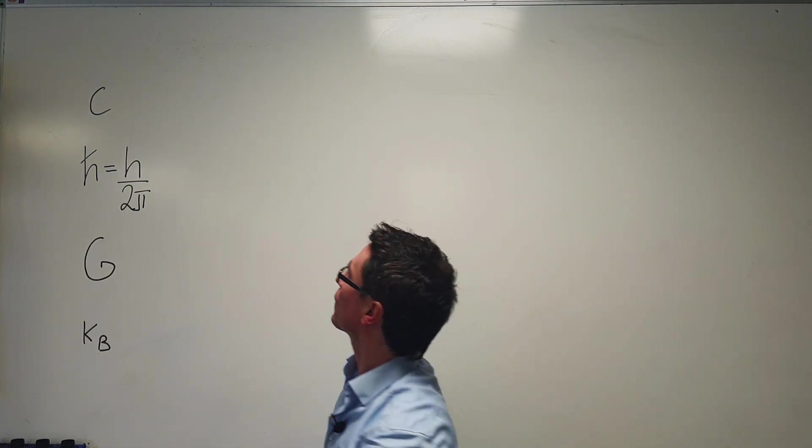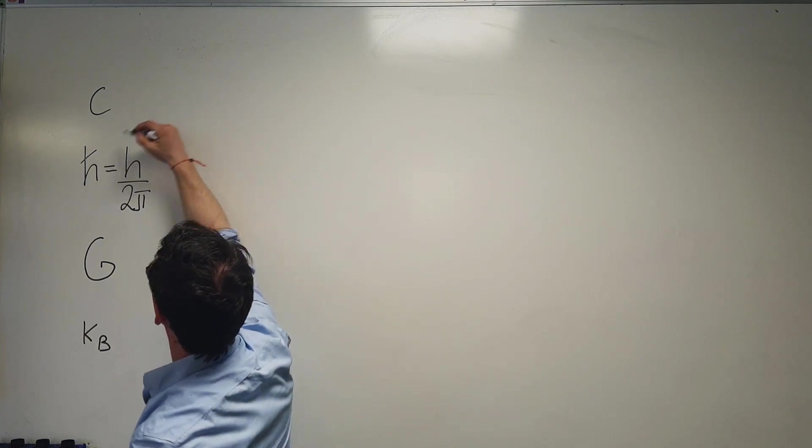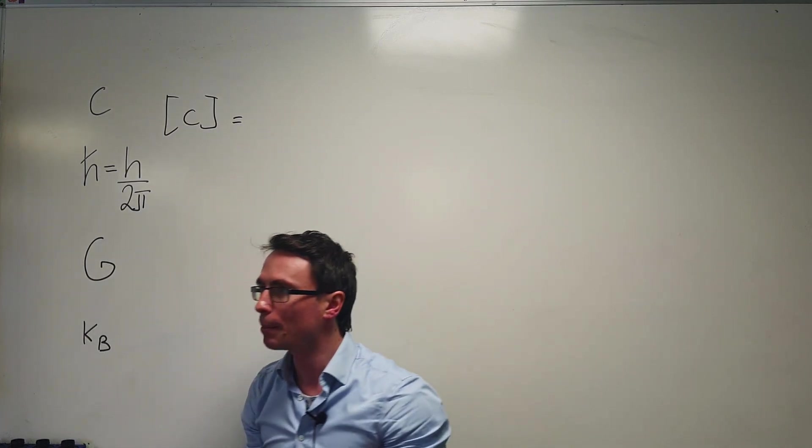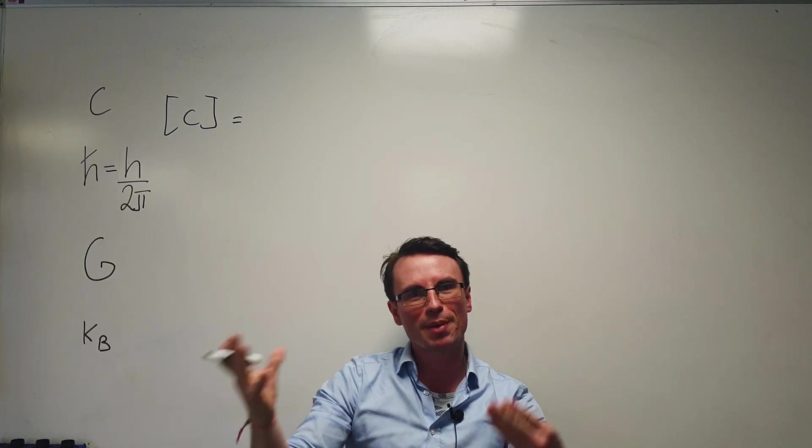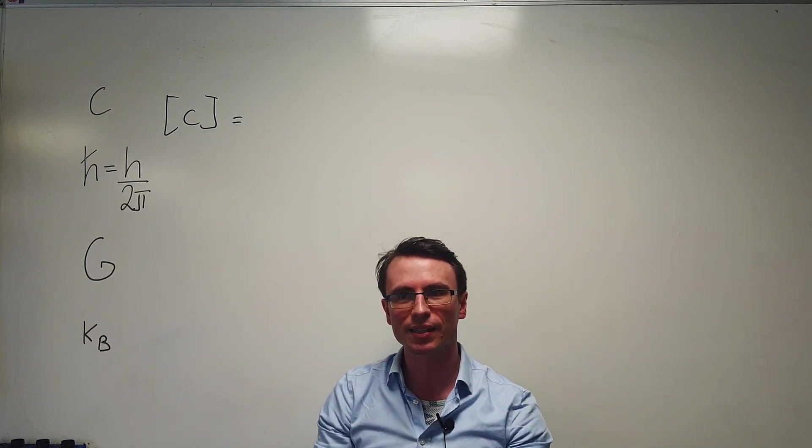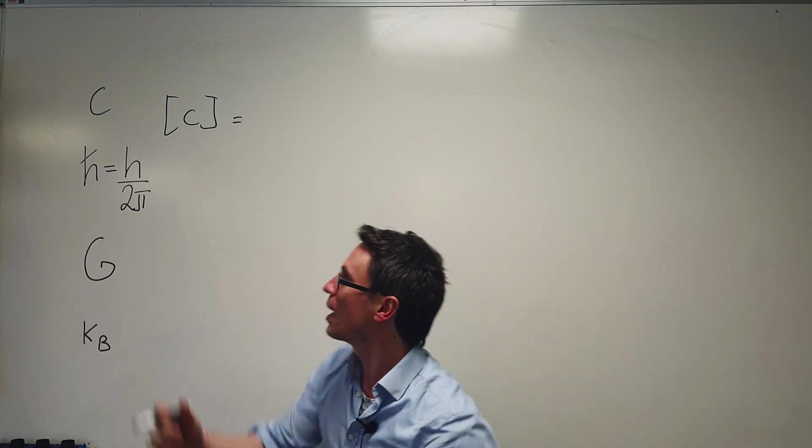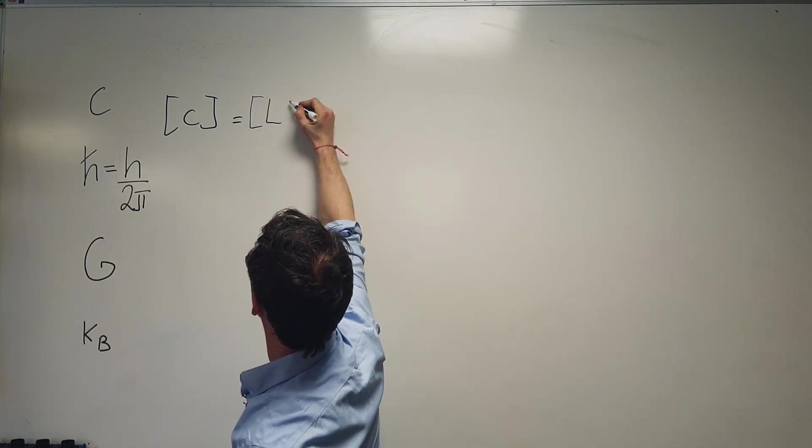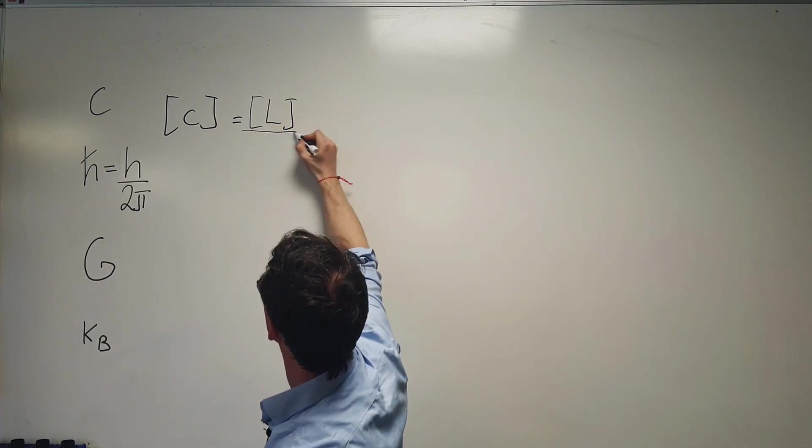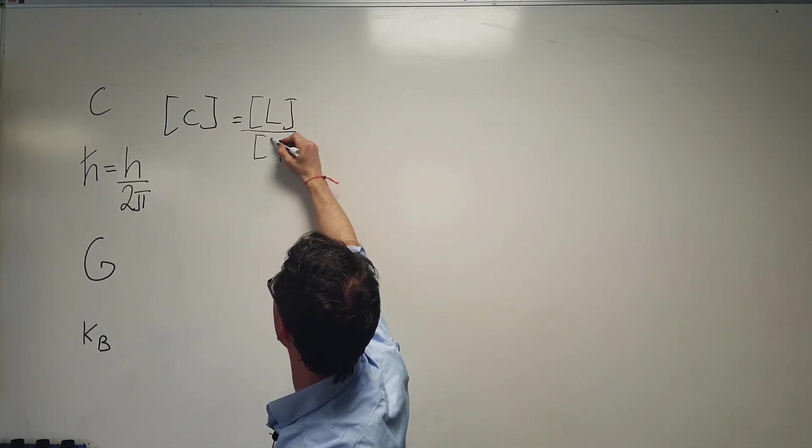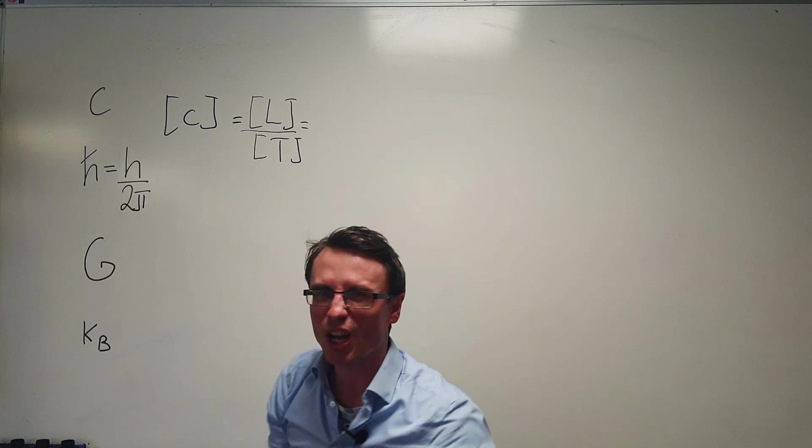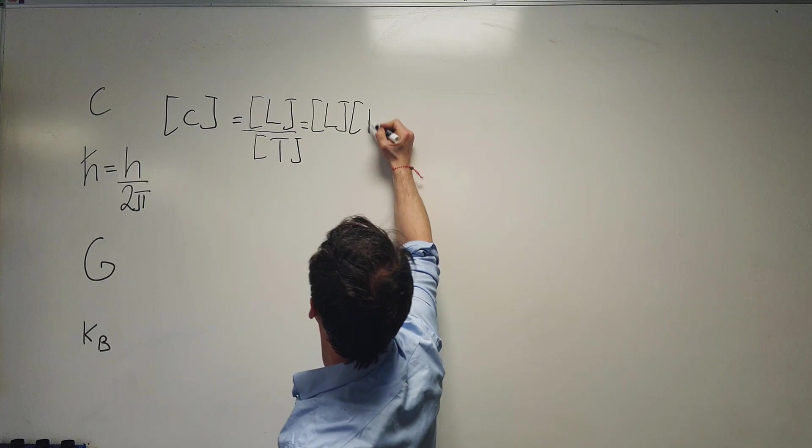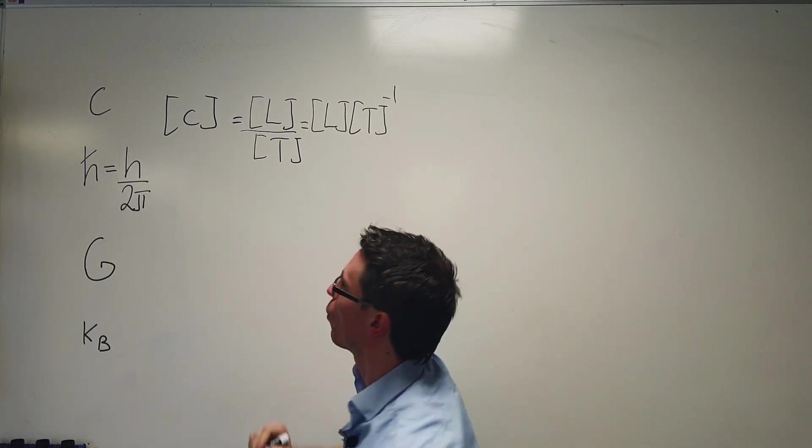Now what do I mean by that? For instance, the dimensions of c can be written with these brackets like that, and because speed is typically just meters per second, we can generalize this for any unit and any dimension and we can say that c will just have the dimensions of length divided by the dimensions of time, which we can just write this down as L T to the power of minus one.